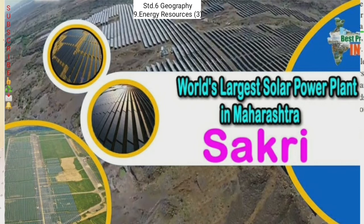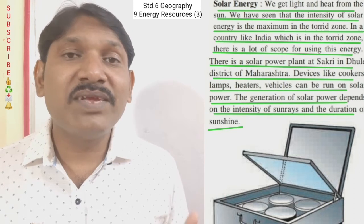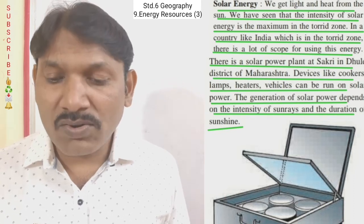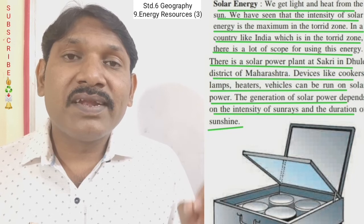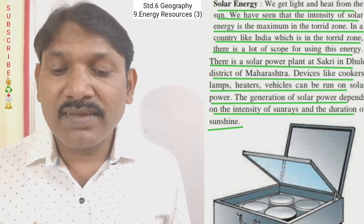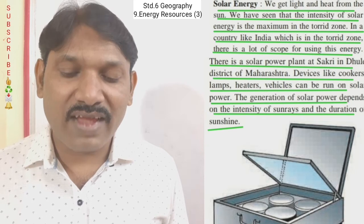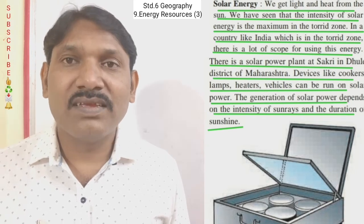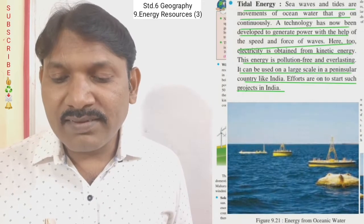There is a solar power plant at Sakri, Dhule district of Maharashtra. Devices like cookers, lamps, heaters, and vehicles can be run on solar power. The generation of solar power depends on the intensity of sun rays and the duration of sunshine.